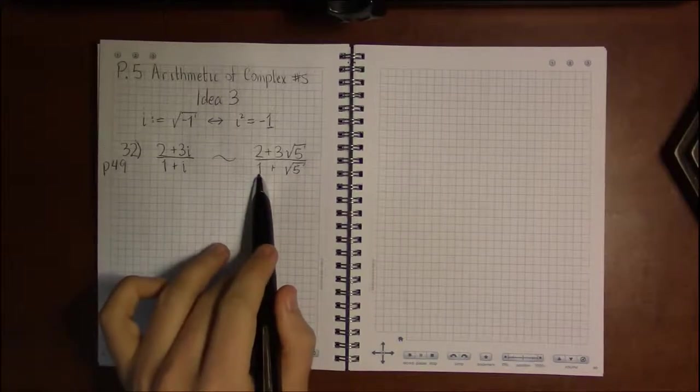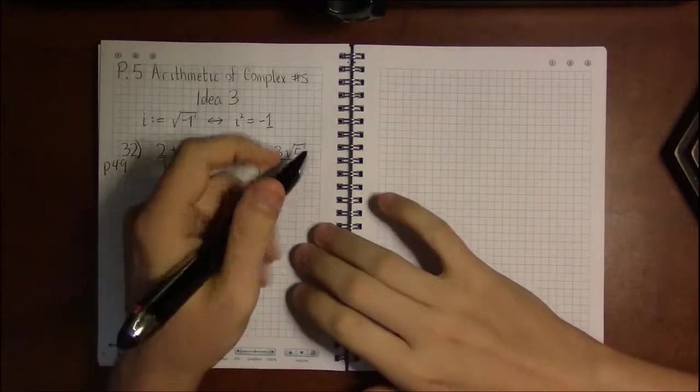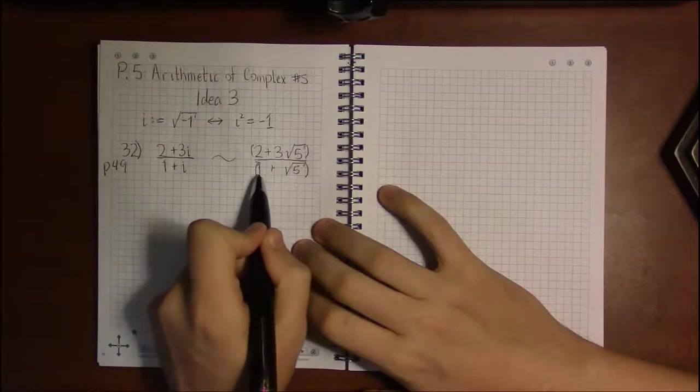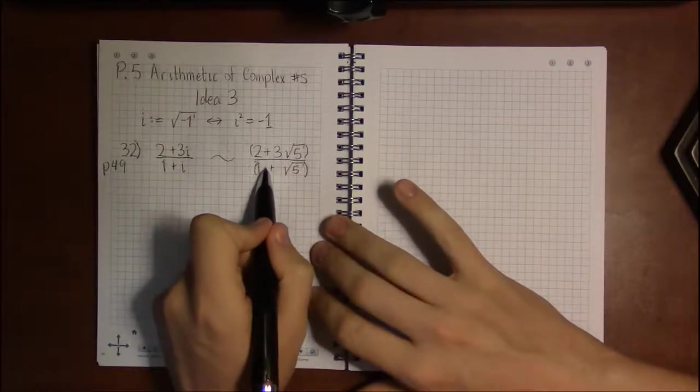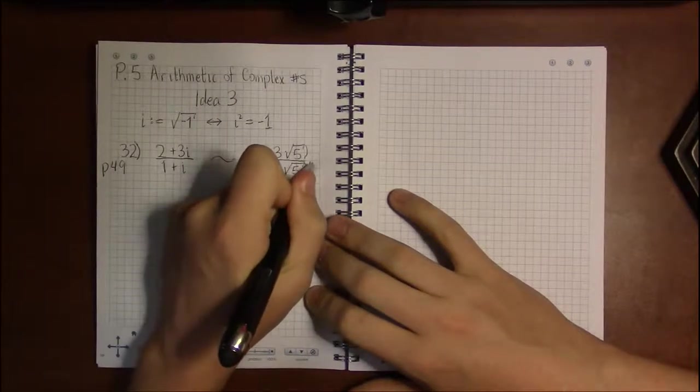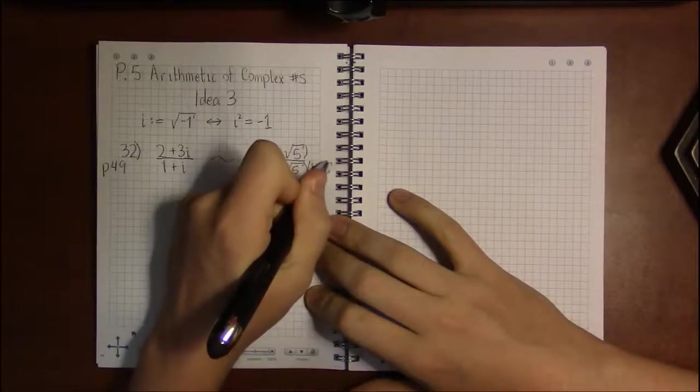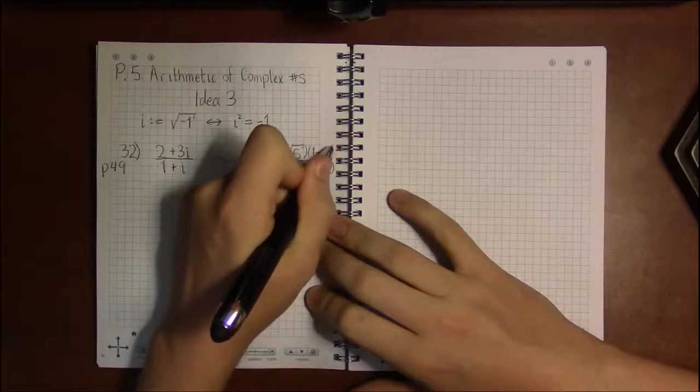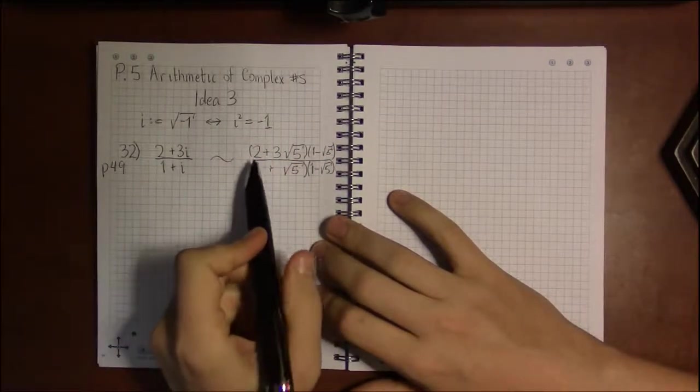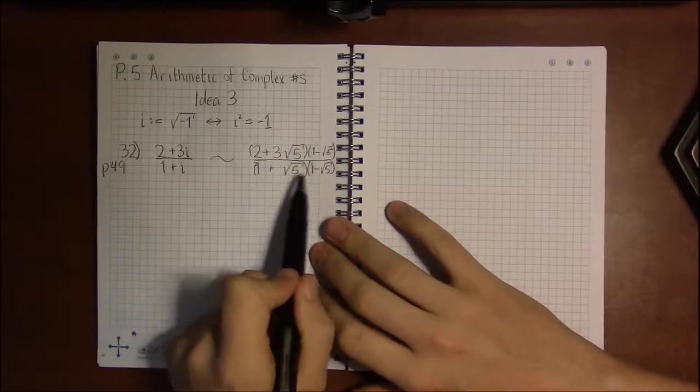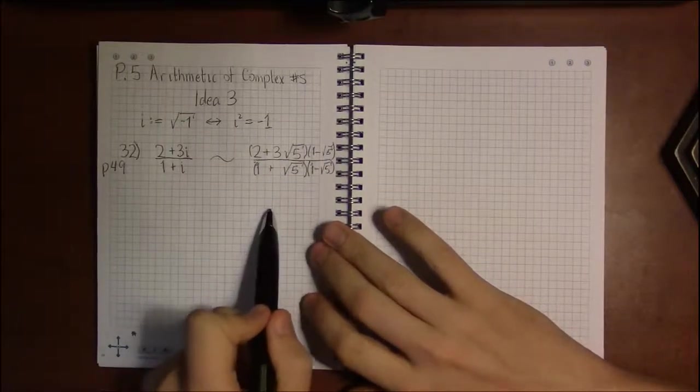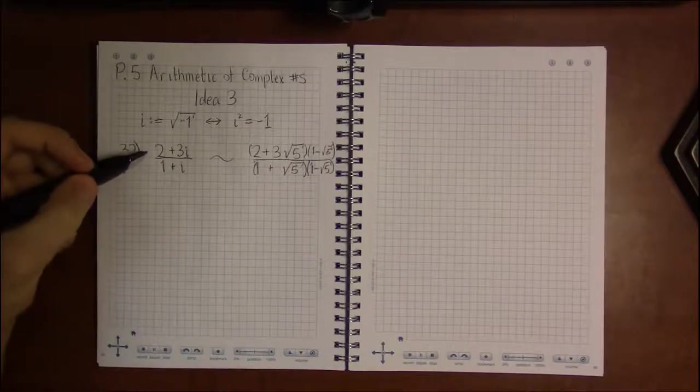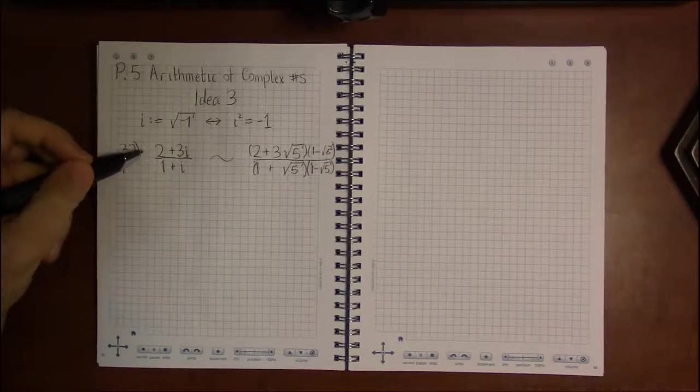So what you end up doing here is multiplying by what you call the conjugate of the denominator. You multiply top and bottom by 1 minus square root 5. You change the sign on the square root. And what you do to the bottom you have to do to the top to make sure you don't change the value of the fraction at all. And then doing the multiplication, distributing or foiling, is going to leave you with a fraction whose denominator has no square roots. So to do division of complex numbers, it's the same thing.